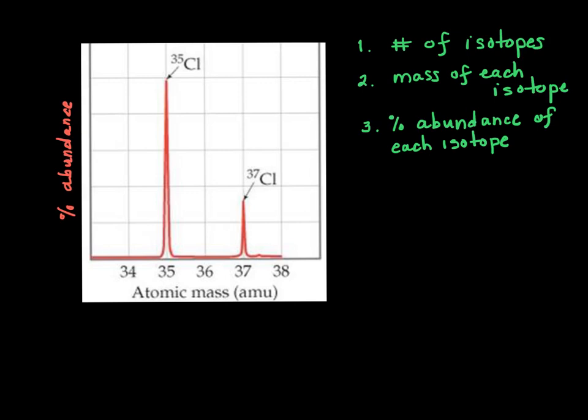A mass spectrometer is going to give us three pieces of information. It's going to give us the number of isotopes. You can see them here. You see a couple of hills here. There's one isotope, two isotopes.